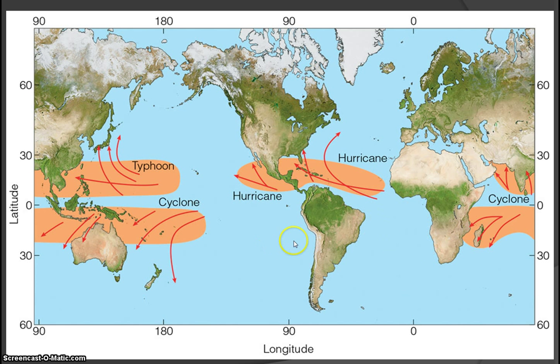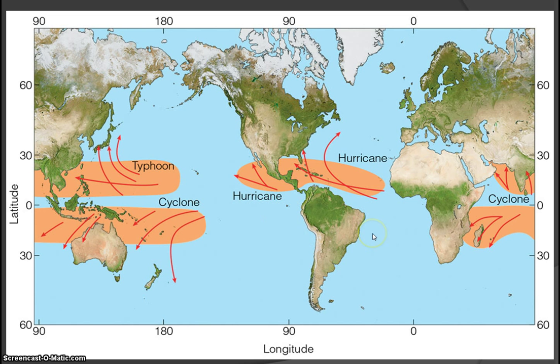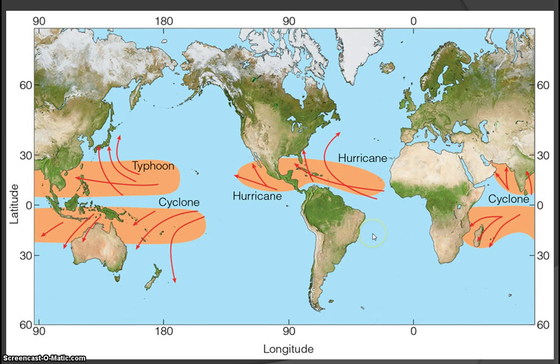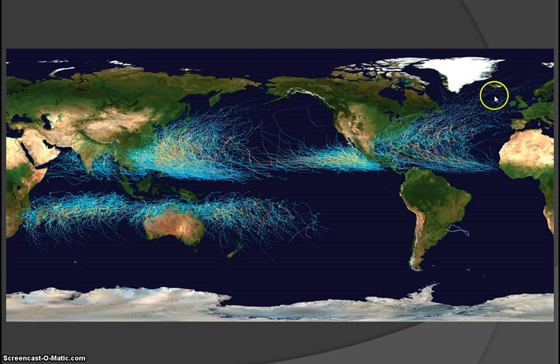Notice the South Atlantic and southeastern Pacific are void of hurricanes, due to cold upwelling currents off the coasts of Africa and South America. Here's a better picture showing plotted hurricane paths and strengths — some making it as far as Iceland and Britain, but mostly dissipating as they move into the United States. Southeast Asia, India, Iran, East Africa, and northern Australia also see significant tropical activity.